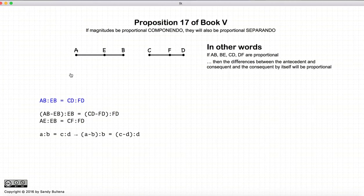So what is this proposition? This proposition starts with we have two magnitudes AB to EB compared to CD to FD. These two ratios are equal. If these two ratios are equal,